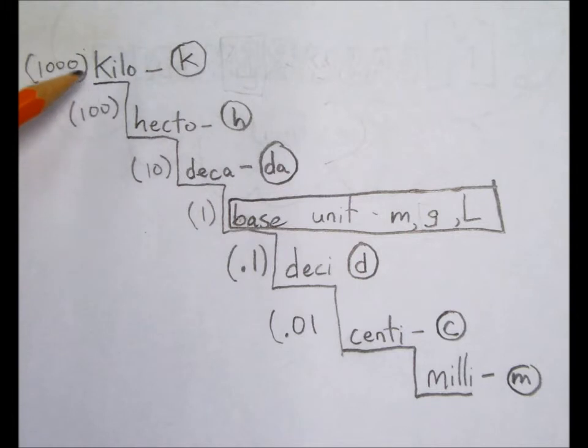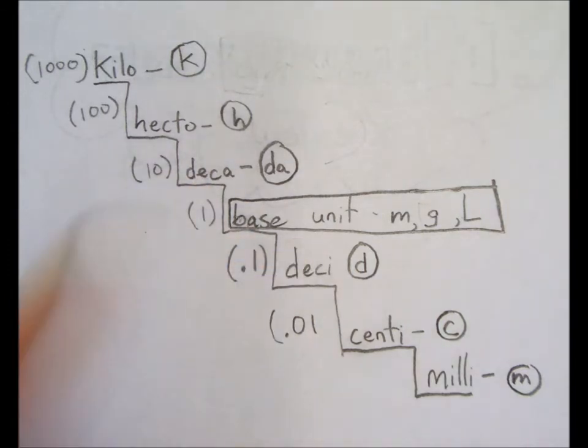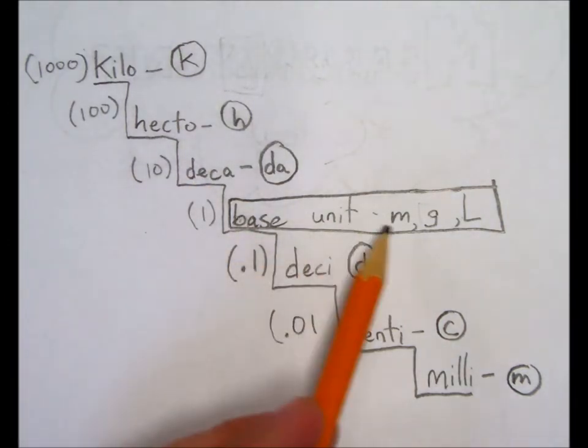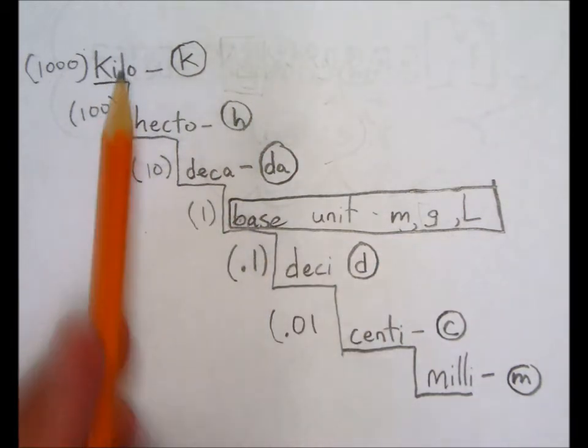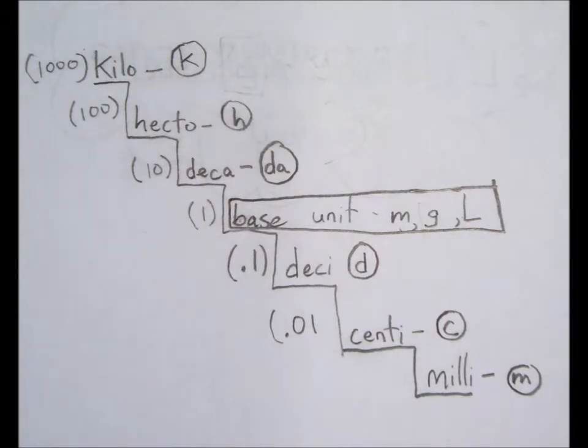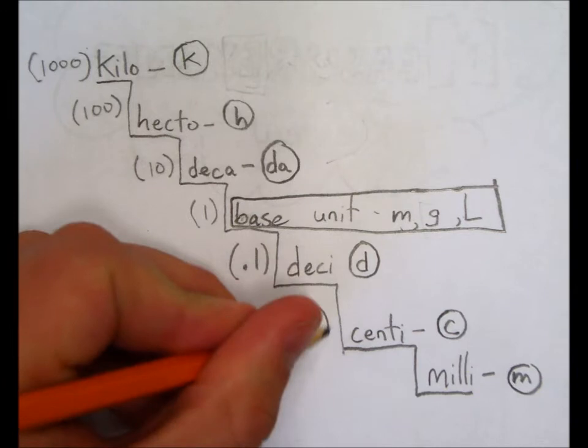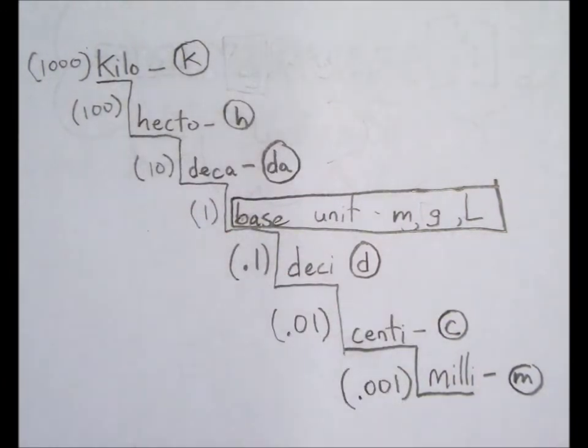As you'll notice on the staircase, we have different amounts, so we have 1000, 100, etc. And that reflects how many of our base unit thing we have. If we were for example measuring something in meters and we had a kilometer, that would mean we have 1000 meters. If on the other hand we had a centimeter, that would mean we would have 1/100th of a meter.